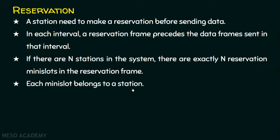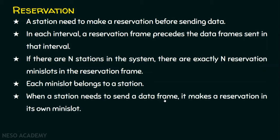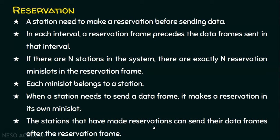When a station needs to send a data frame, it makes a reservation in its own mini slot. The reservation frame contains n reservation mini slots; each station has its own mini slot. The stations that have made reservations can then send their data frames after the reservation frame — the reservation frame precedes the data frames.